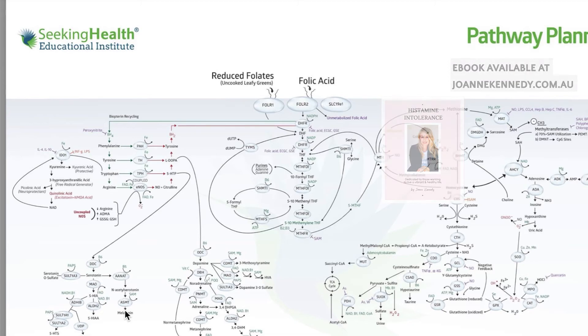And then serotonin will be converted into melatonin via this ASMT enzyme. And MT means a methyltransferase, so it's a methyltransferase enzyme. It needs a methyl group to work, which is why it has SAM as the cofactor.